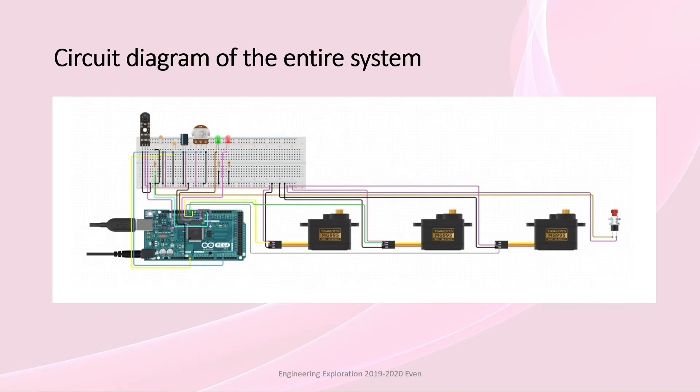The circuit diagram of entire system consists of one Arduino mega, three servo motors, one button, one IR sensor, one potentiometer, two LEDs green and red, one breadboard, resistors, jumper wires and connector cable.